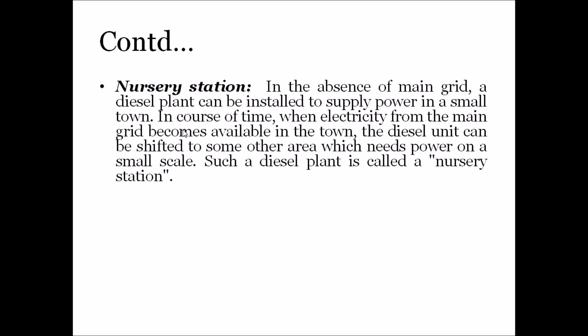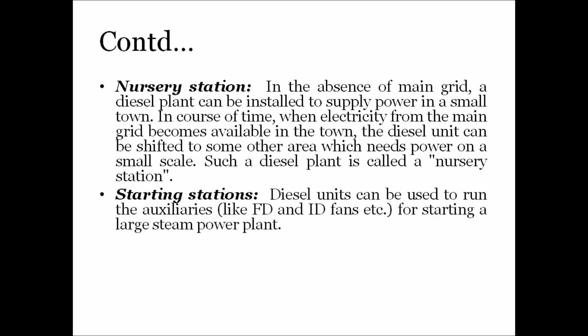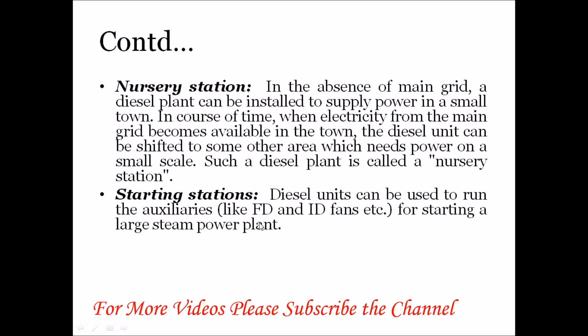As a nursery station, in the absence of a main grid, a diesel plant can be installed to supply power in a small town. In due course, when electricity from the main grid becomes available in the town, the diesel unit can be shifted to another area which needs power on a small scale. This type of diesel plant is called a nursery station, which moves from one point to another wherever power is required.